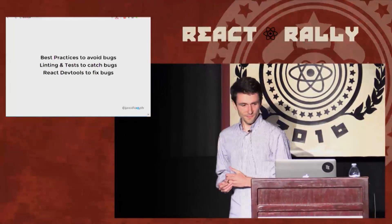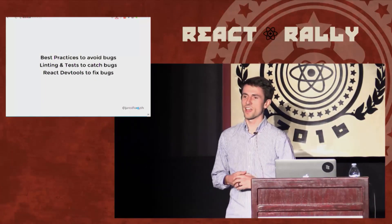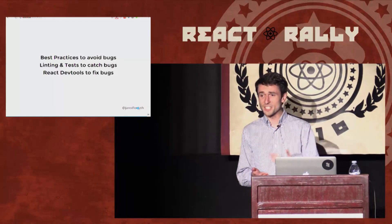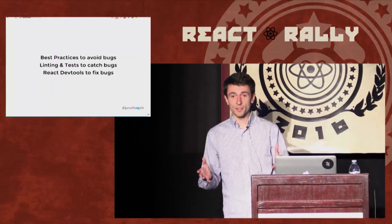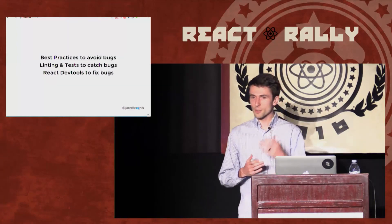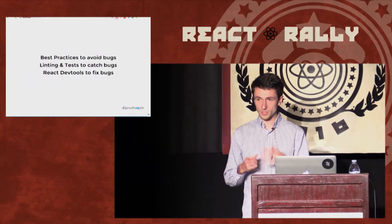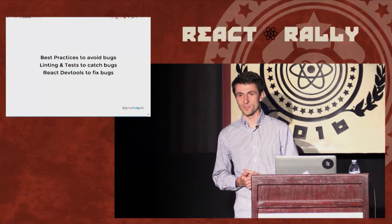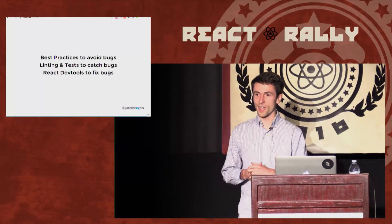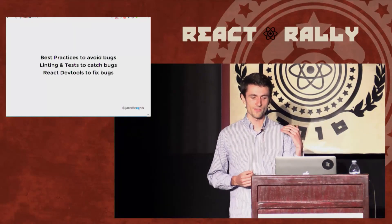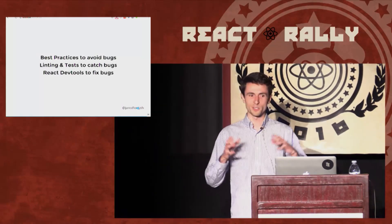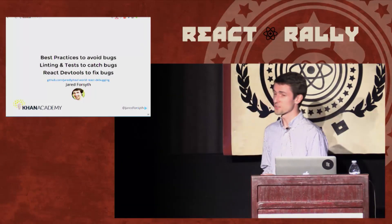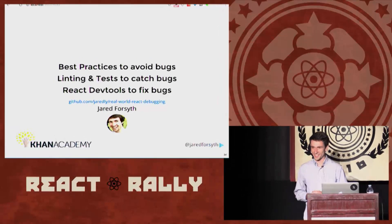So in conclusion, I think there are some best practices we can use to avoid writing bugs in the first place. There's some linting and testing you might want to look into, think about the trade-offs, and maybe implement to help you catch the bugs. And React DevTools is there to help you fix them. I'm still contributing to it, so let me know on Twitter if there's a feature you want or if it's broken. These slides are all online — you can get the much easier-to-read version. Thank you.